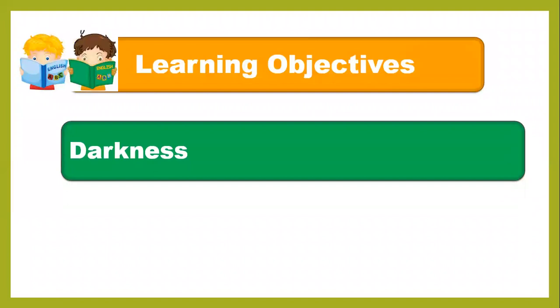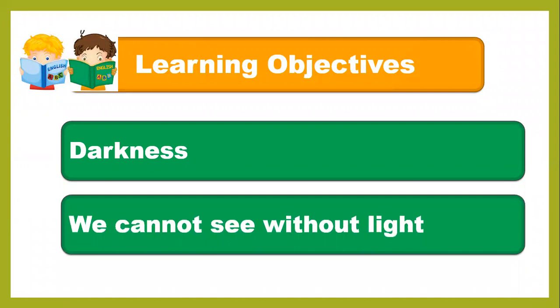In this lesson you will learn about darkness — what is darkness — and you will learn that we cannot see without light. Light is very important; without light we cannot see the things, we cannot see the objects.